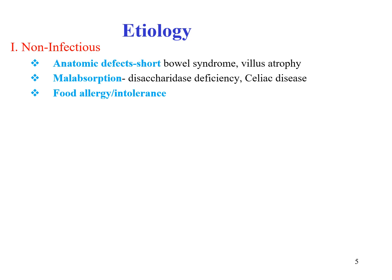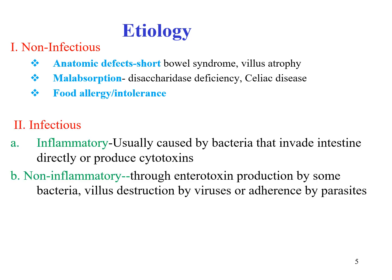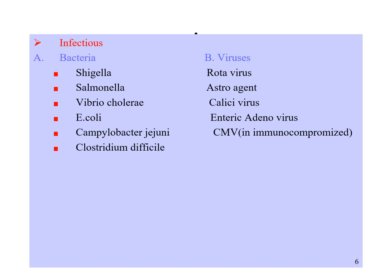The etiology of diarrhea is classified as non-infectious and infectious. Non-infectious causes can be anatomic defects, malabsorption, or food allergy or intolerance. Infectious causes can be inflammatory or non-inflammatory. Inflammatory diarrhea is usually caused by bacteria invading the intestines directly or producing cytotoxins, whereas non-inflammatory diarrhea is through enterotoxin without invasion, enterotoxin produced by some bacteria, villous destruction by viruses, or adherence by parasites. Infectious causes can be bacteria, viruses, parasites, and fungi.